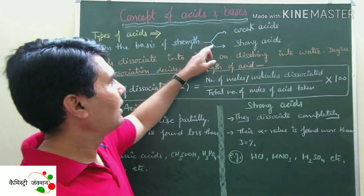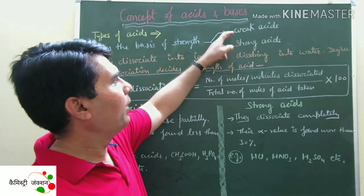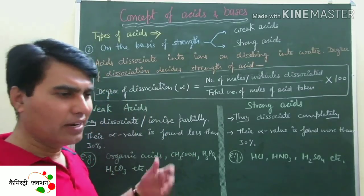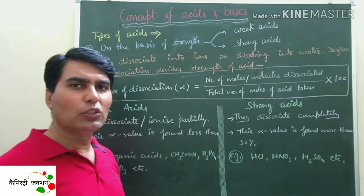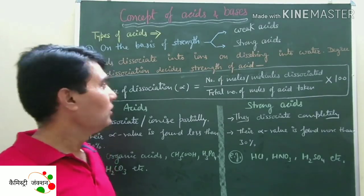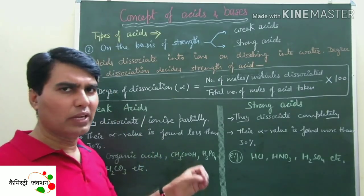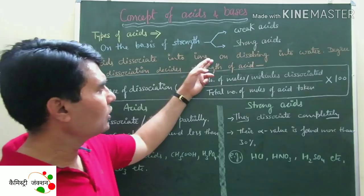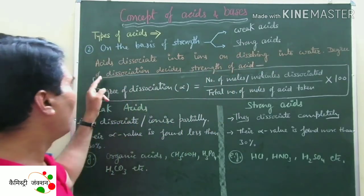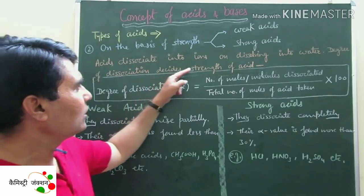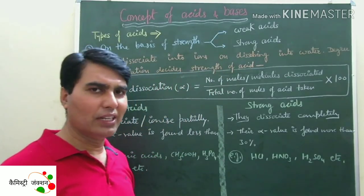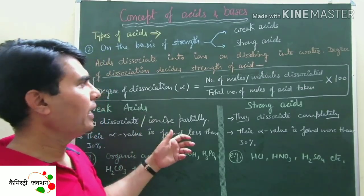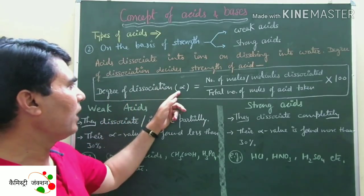On the basis of strength, acids are of two types: weak acid and strong acid. As earlier discussed, acids ionize or dissociate in water to give H+ or hydronium ions. The degree of dissociation decides the strength of the acid — the more it dissociates, the stronger it is. This dissociation rate is known as degree of dissociation, represented by alpha (α).